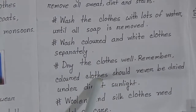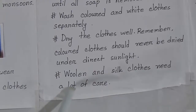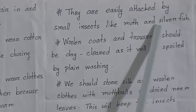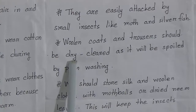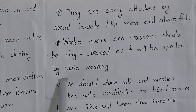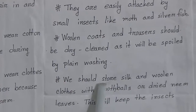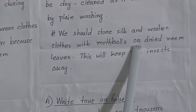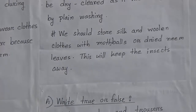Wash colored and white clothes separately. Dry the clothes well. Remember, colored clothes should never be dried under direct sunlight. Woolen and silk clothes need a lot of care — they are easily attacked by small insects like moths and silverfish. Woolen coats and trousers should be dry cleaned, as they will be spoiled by plain washing. We should store silk and woolen clothes with mothballs or dried neem leaves to keep the insects away.